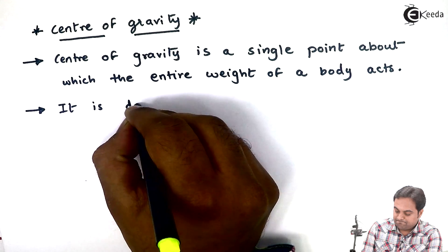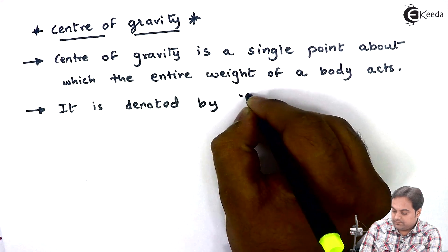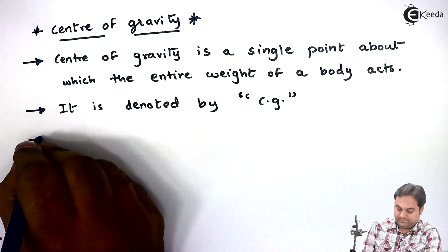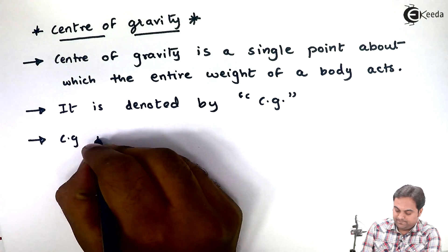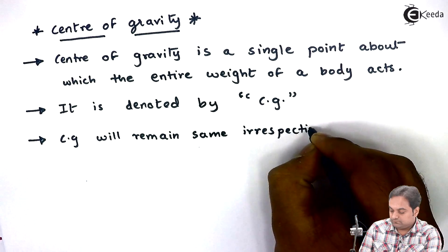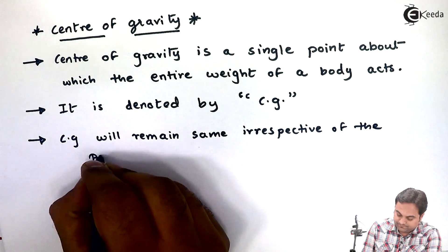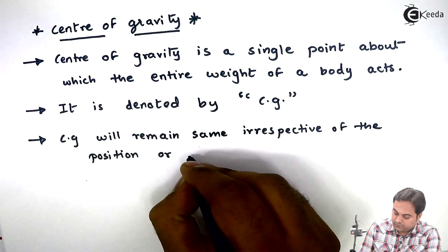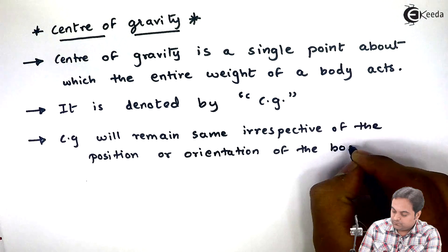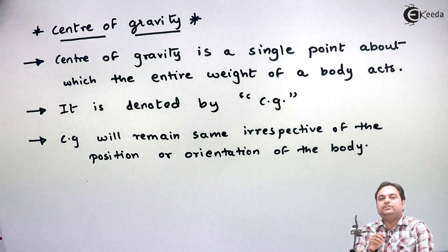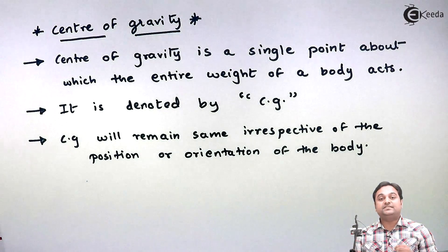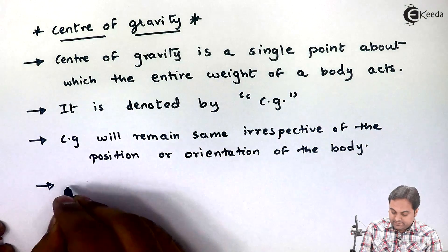It is denoted by CG — it means whenever we write CG it means center of gravity. CG will remain the same irrespective of the position or orientation of the body. It means that point will not change; it will remain the same even if we turn the body or change the position of the body.